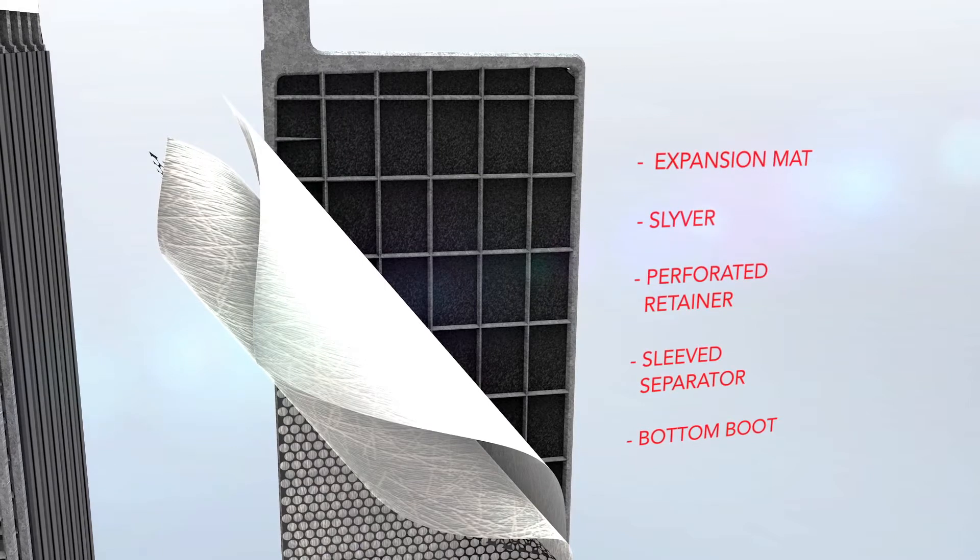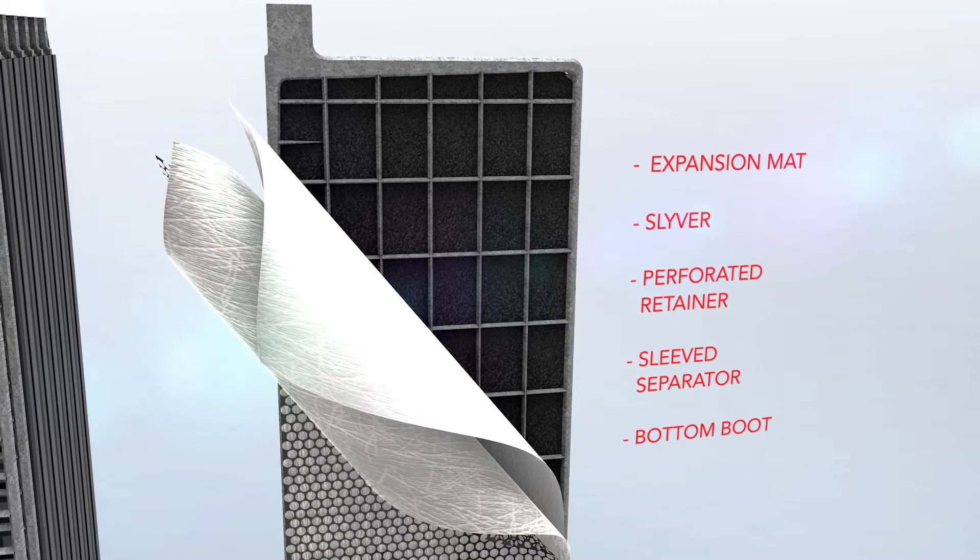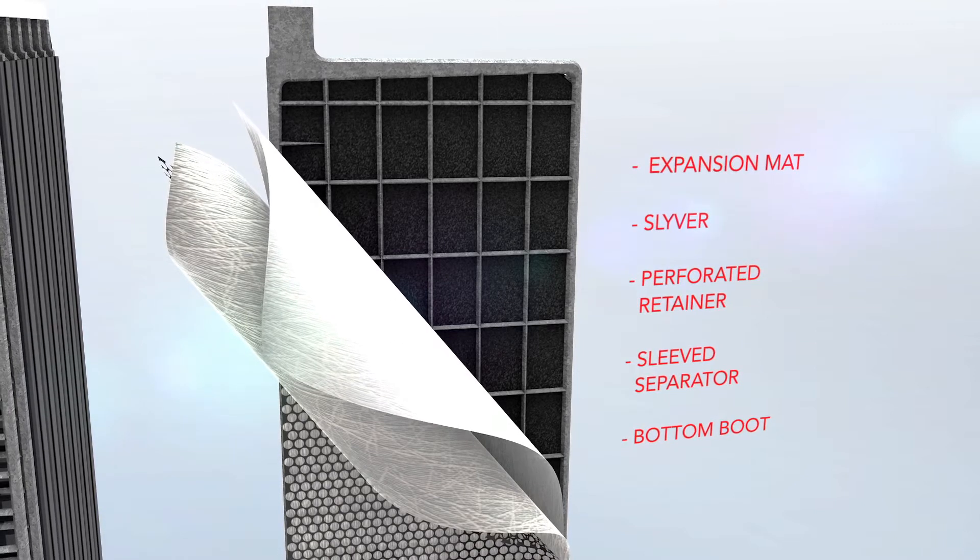Encasing the positive grid is HUP's five-layer plate wrap, providing additional protection against shedding of the positive active material and preventing electrical shorts.